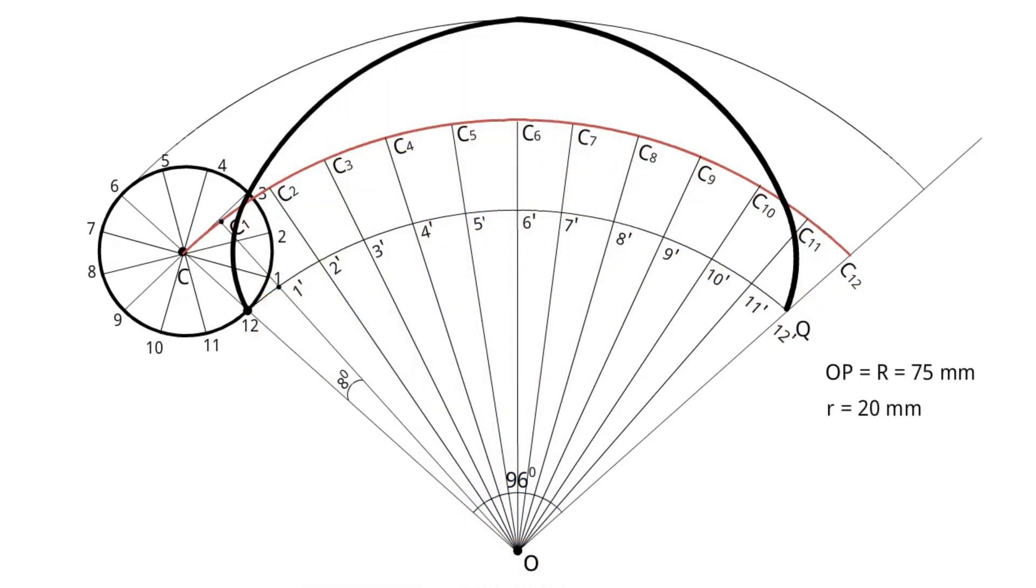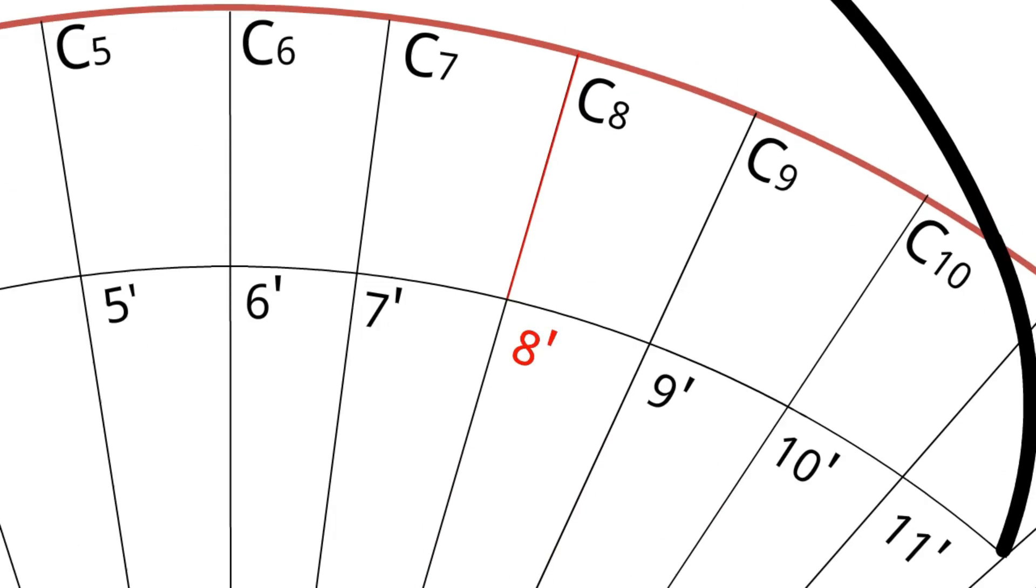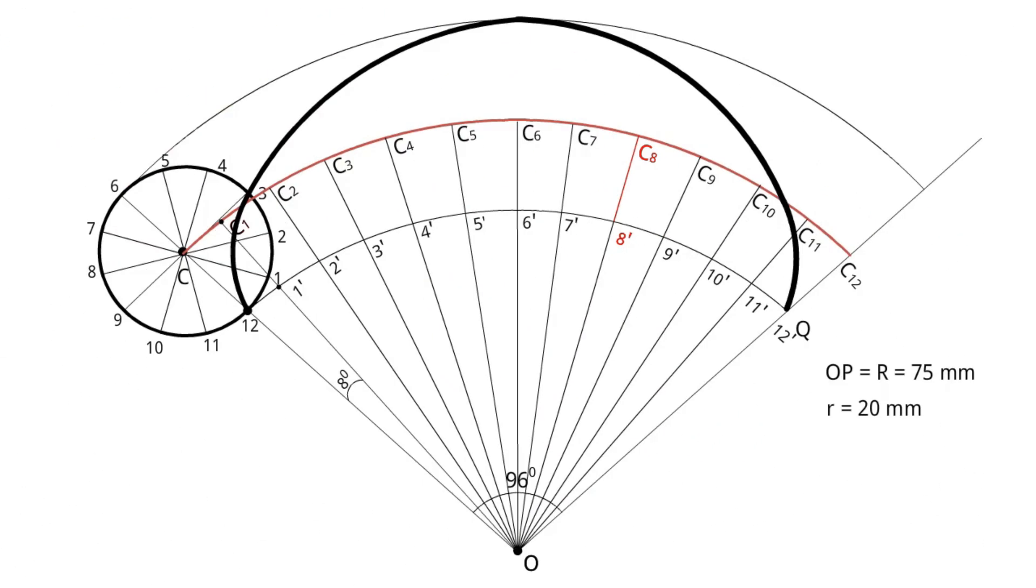To draw a tangent and normal at any point on the curve. Step 10. Take any line between 1-C1 to 12-C12. Let us take 8-C8 line. Step 12. C8 is center and radius R equals 20 millimeters. Cut the locus of center.